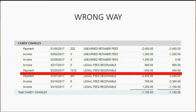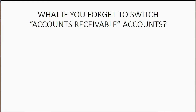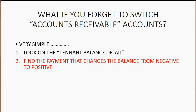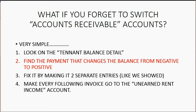I've put into the file the wrong way so that you can see how you would fix it. It's very simple. First, you would double click and open up these invoices and change them to the correct accounts receivable account. Then you would delete the one wrong payment and re-enter it properly with the right amounts and the right accounts. The official steps: number one, look at the most important report, the client balance detail. Number two, find the payment that changes the balance from negative to positive. Number three, fix it by making it into two separate entries exactly the way we showed. Then make every following invoice go to the unearned retainer income account.